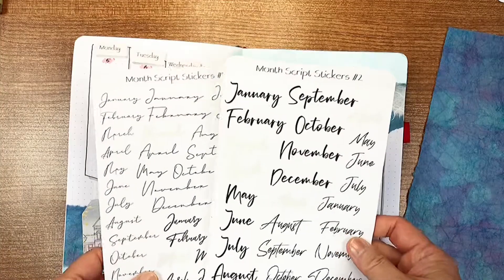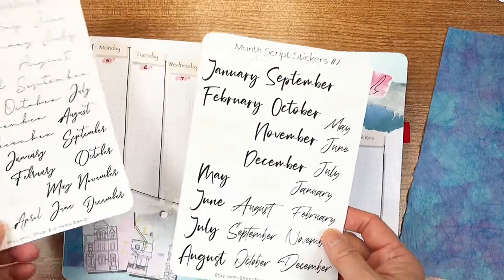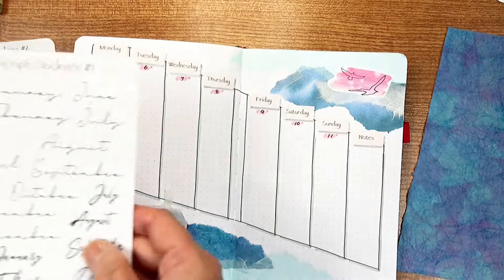I'm drawing some drop shadows on each box to make them pop. And then, placing the April sticker on the top of the page.